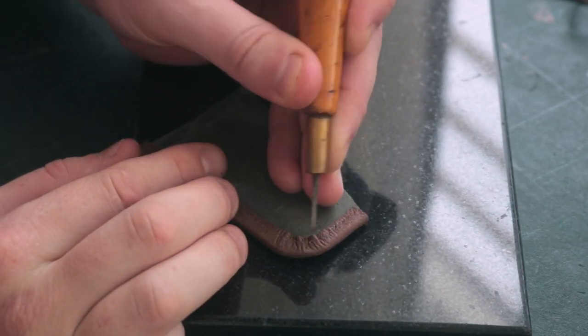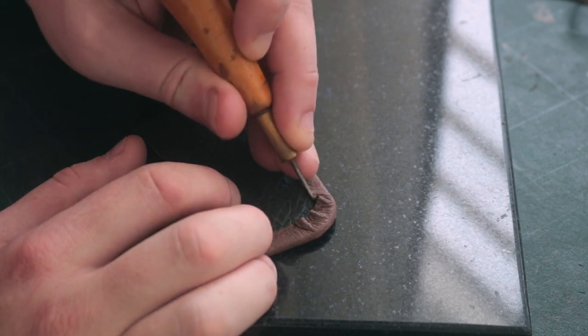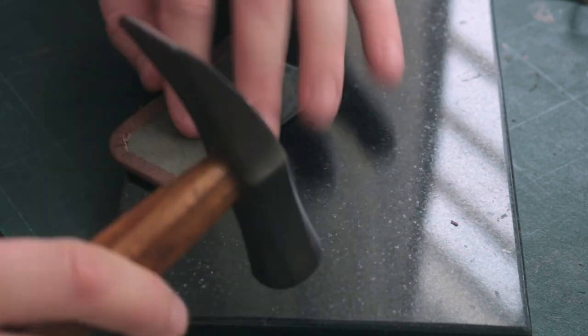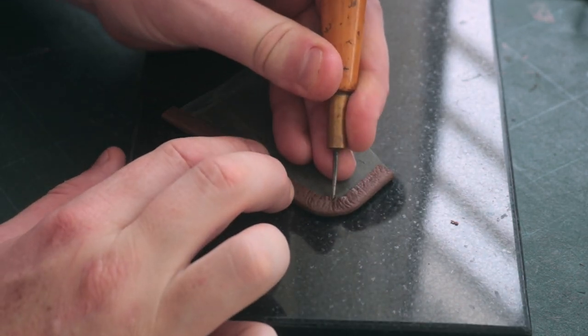I'll form some pleats in the curve and using the scratch awl I'm trying to make the pleats as even as possible and then gently tap them with a hammer.